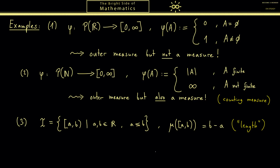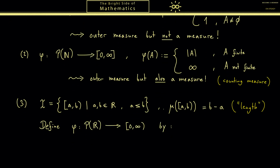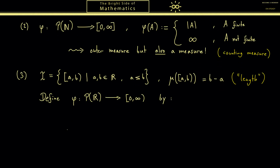Looking back at Carathéodory's extension theorem, you see this is what we called a semi-ring of sets and the function mu was a pre-measure. We also remember that we want to measure more sets than just intervals, and if we want to measure all sets this leads us to the power set and therefore to the outer measure. Hence we define our phi on the power set of ℝ.